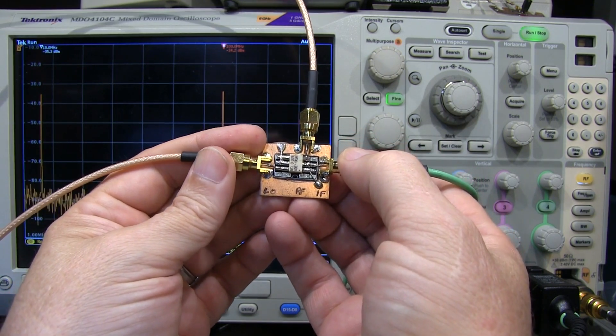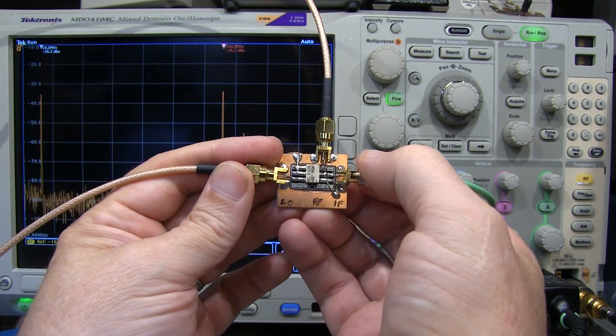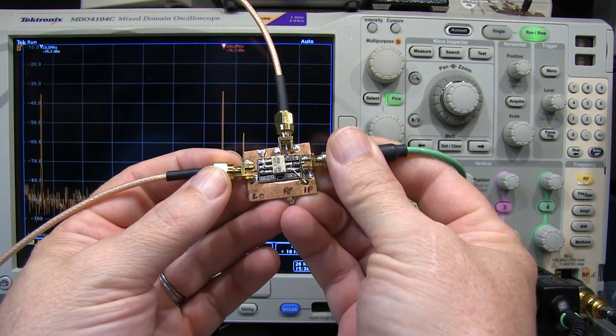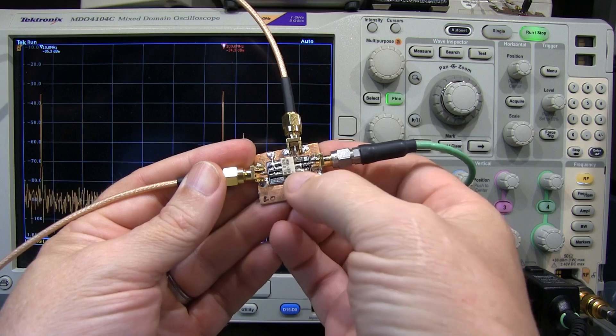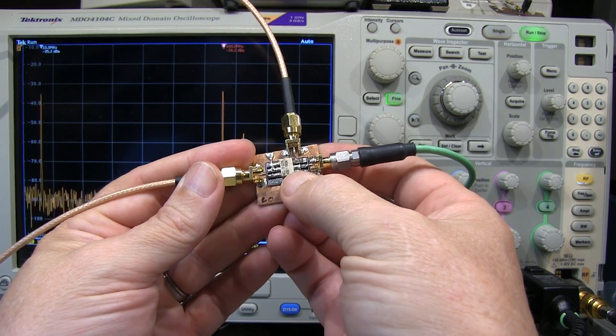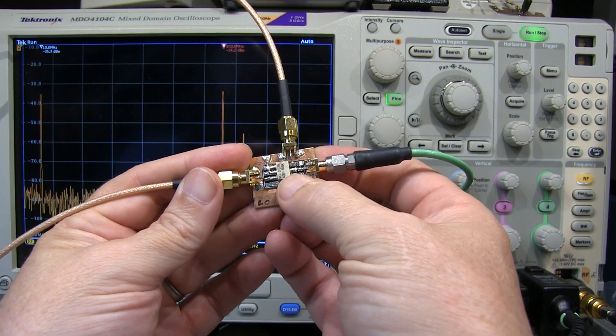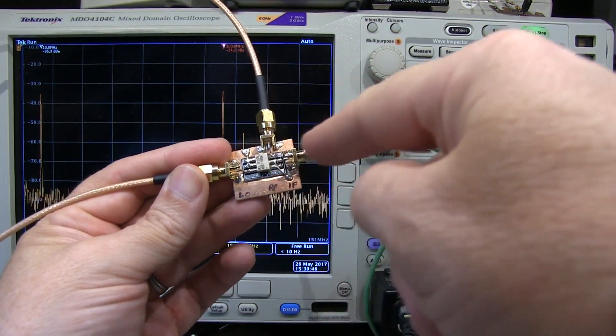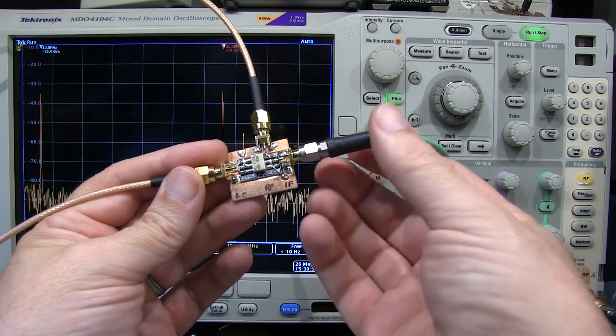And this is important because this really sets the response of the mixer. Now, setting the local oscillator drive power correctly will ensure that the diodes in the mixer are getting fully commutated, and by doing that, you ensure that you minimize the conversion loss from the RF input port to the IF, or converted output frequency port.